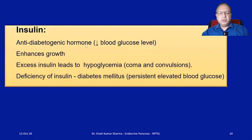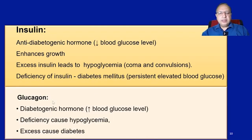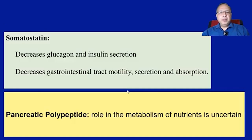Insulin is an anti-diabetogenic hormone — it causes a decrease in blood glucose level and enhances growth. Excess insulin leads to hypoglycemia, which may lead to convulsions. Deficiency of insulin causes diabetes mellitus — a persistent elevated blood glucose level and one of the most common endocrine disorders worldwide. Glucagon is the diabetogenic hormone. Somatostatin inhibits the release of both glucagon and insulin and decreases GI motility, secretion, and absorption. Pancreatic polypeptide plays a role in GIT regulation.